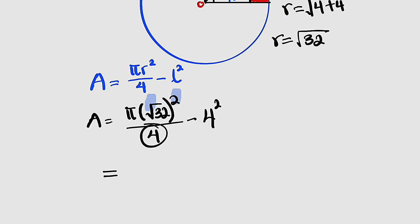The minus is going to give us 16. So we have 8π - 16 centimeters squared.